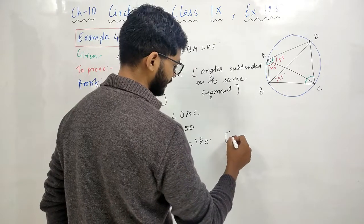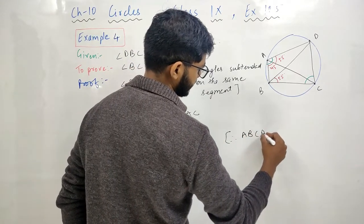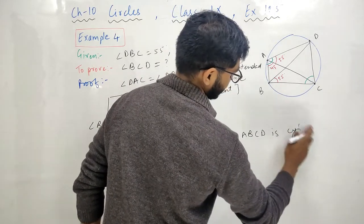Reason क्या है? Reason है कि quadrilateral ABCD is cyclic. ठीक है?